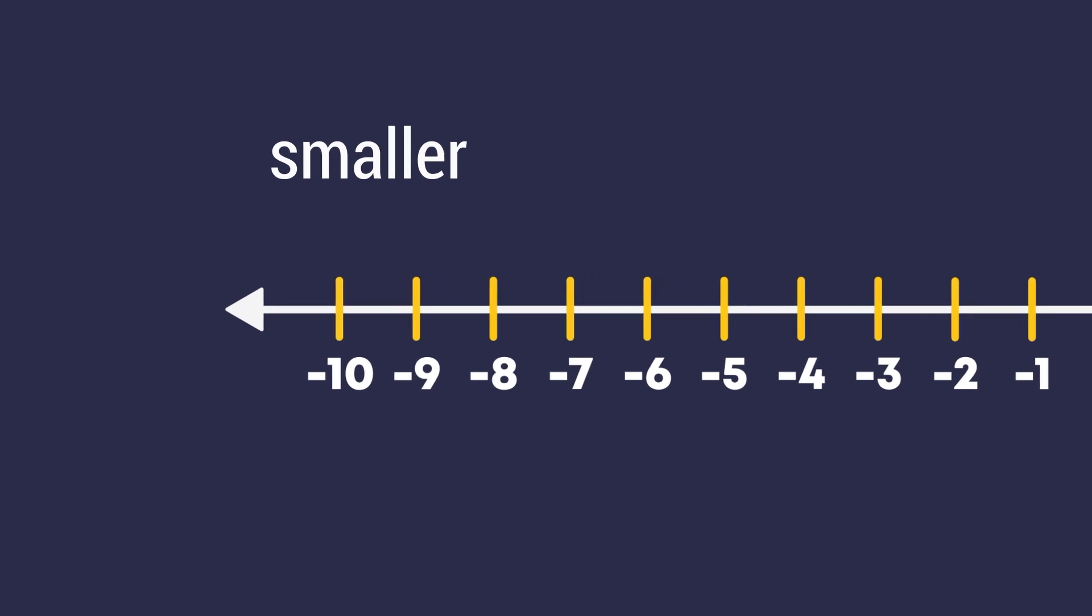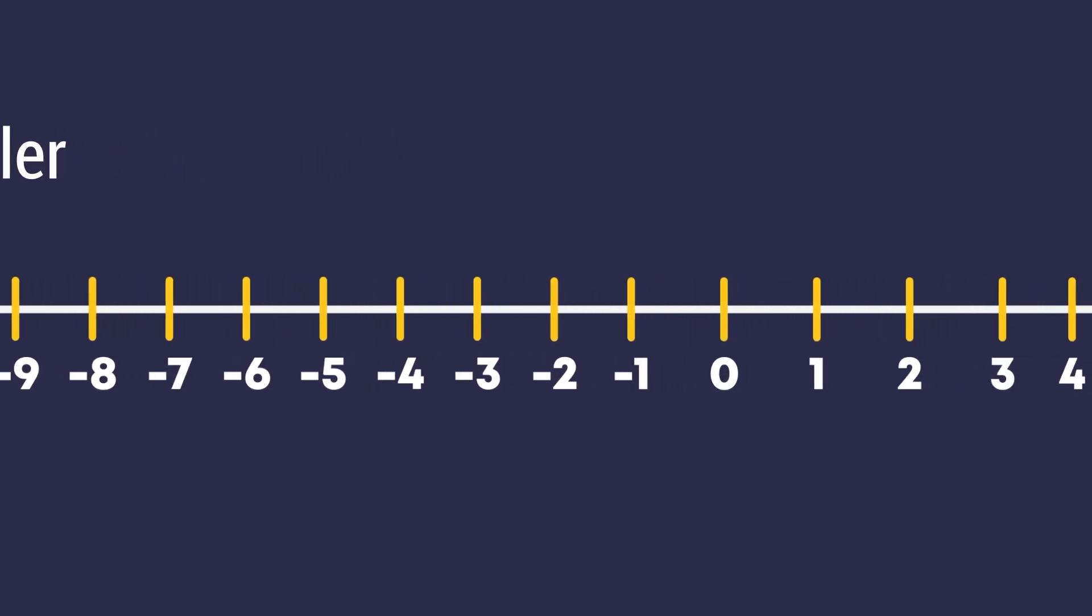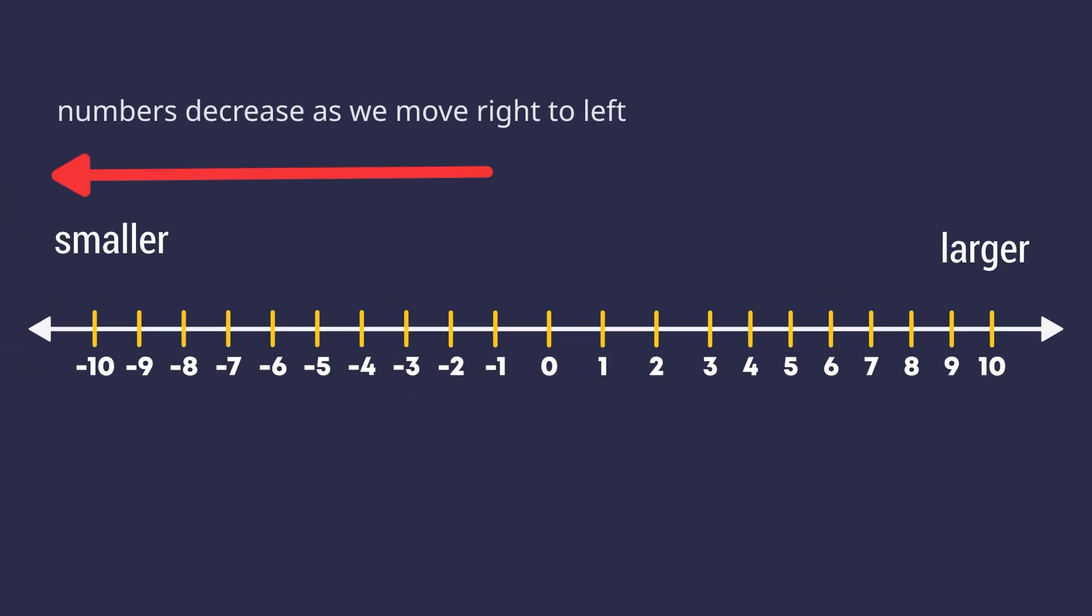Usually, these integers are represented or shown on a number line. Now just to make sure we're all on the same page, a number line is a line that continues left and right forever, with numbers represented as points on it.